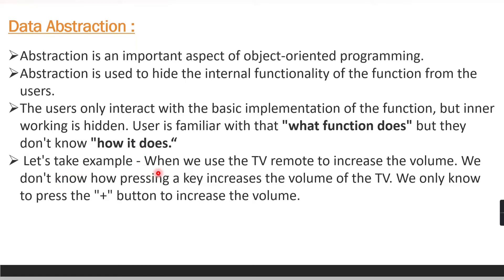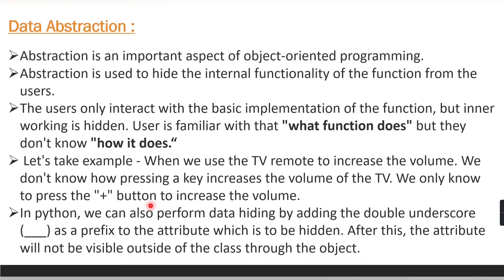Let's take a real-world example. When we use a TV remote to increase the volume, we don't know how pressing a key increases the volume of the TV. We only know to press the plus button to increase the volume. We know that pressing the plus button will increase the volume, but we don't know how internally this is happening inside the TV remote. That is the use of data abstraction — we are hiding the implementation details from the user.